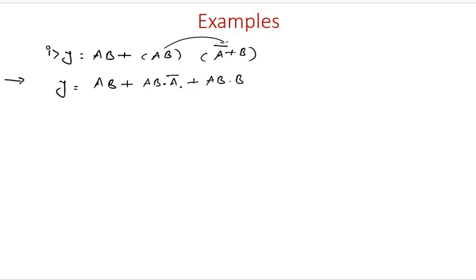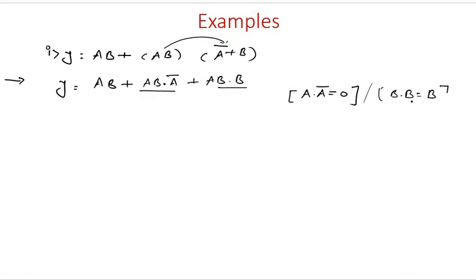Once that is done, the next step is to apply the rules. For this product term we have a into a-bar, and we know that a into a-bar is always equal to 0. Similarly, in this product term we have b into b — and b into b equals b. So the second term becomes 0, which vanishes, and the third term gives us a into b.